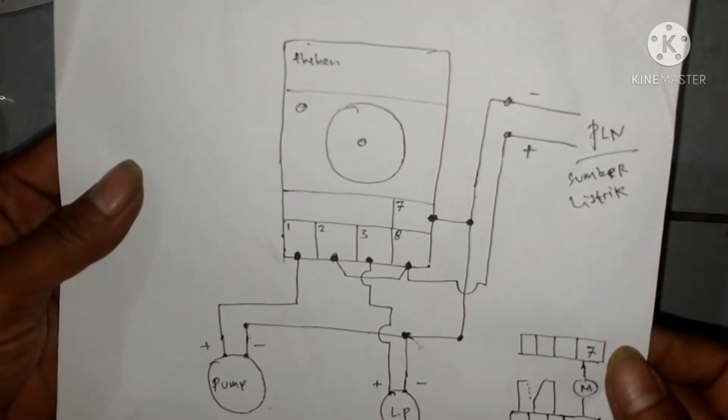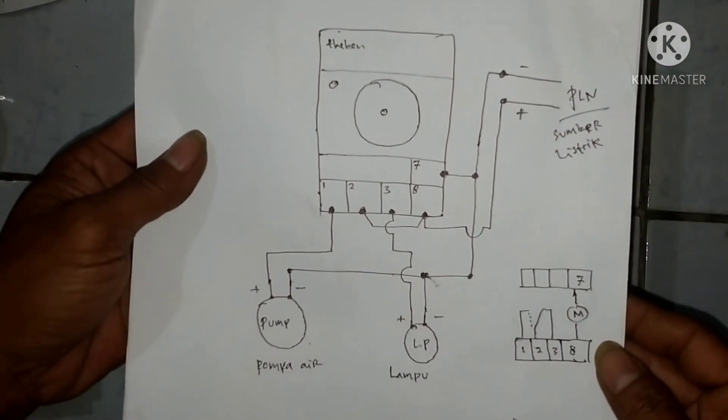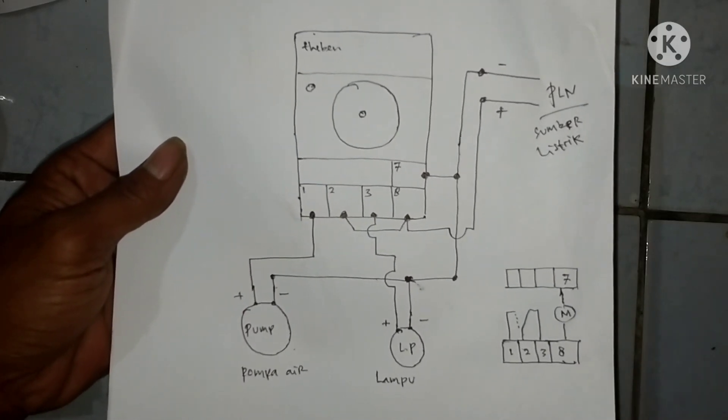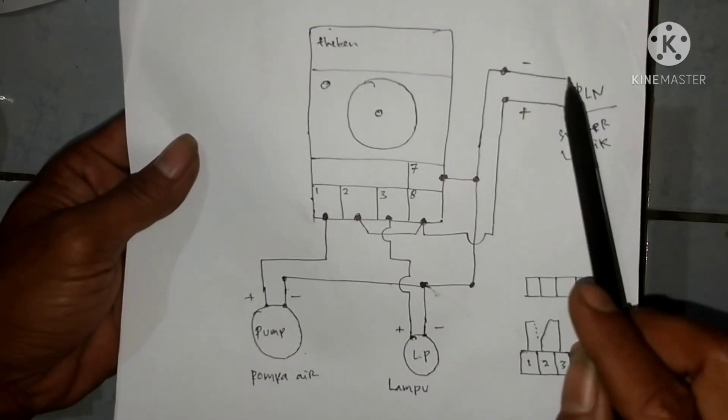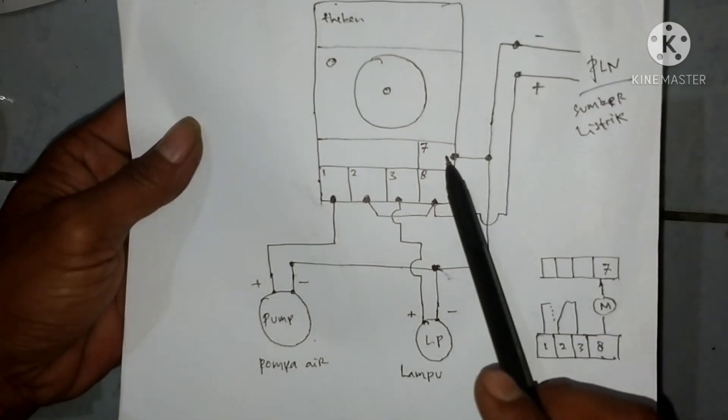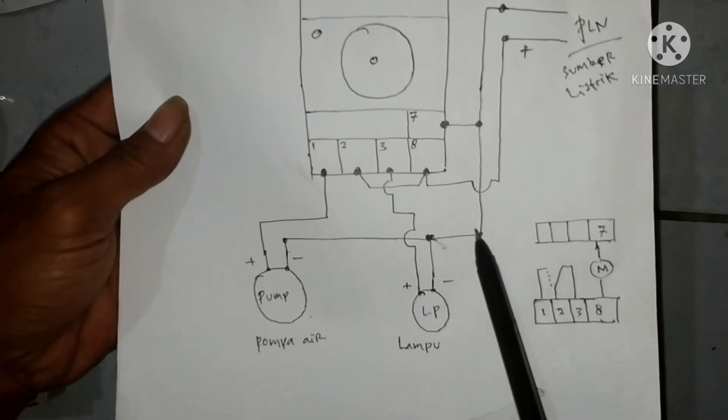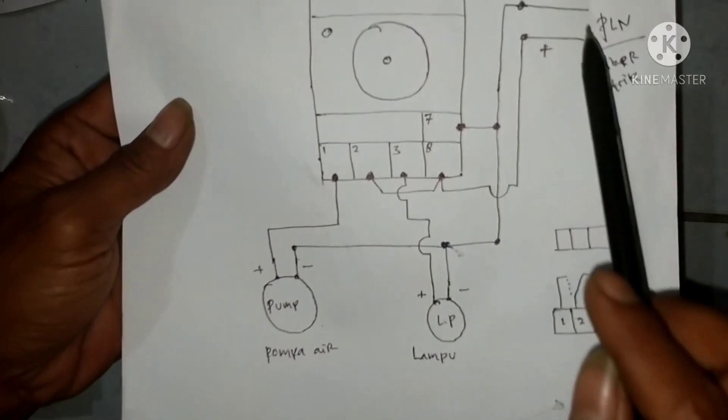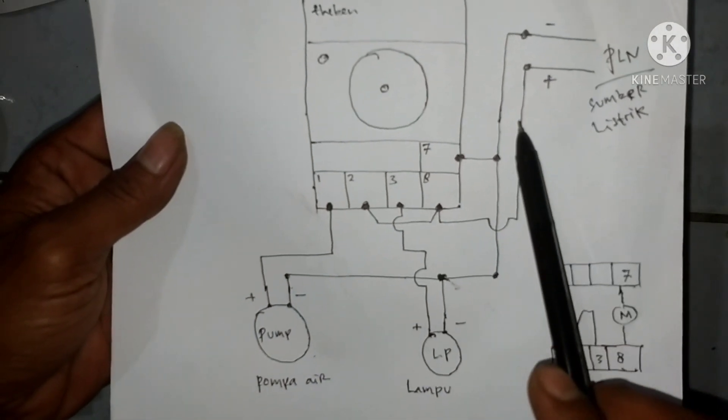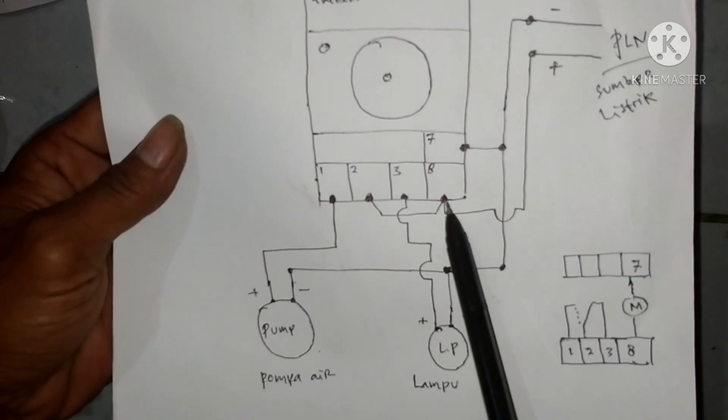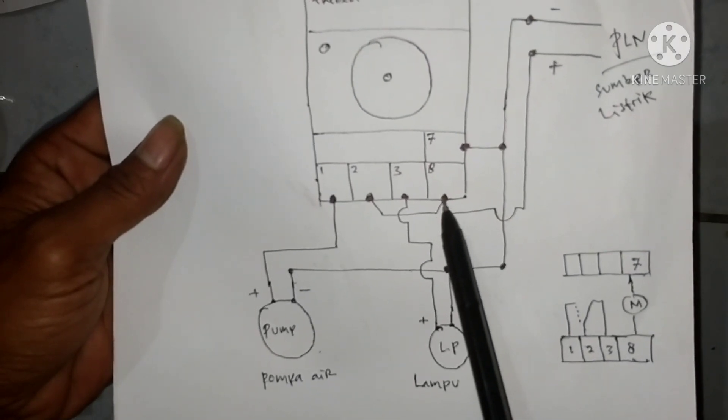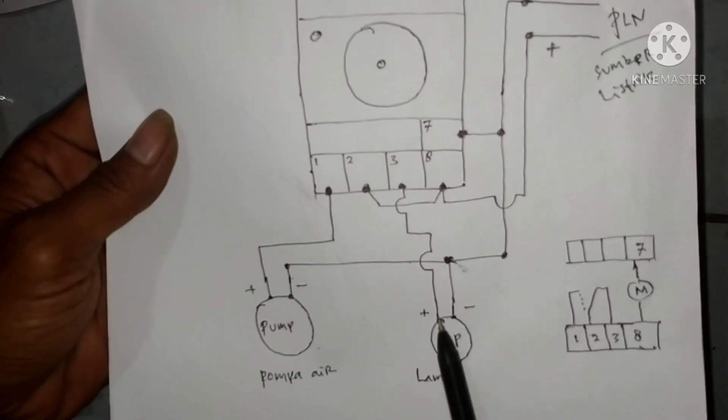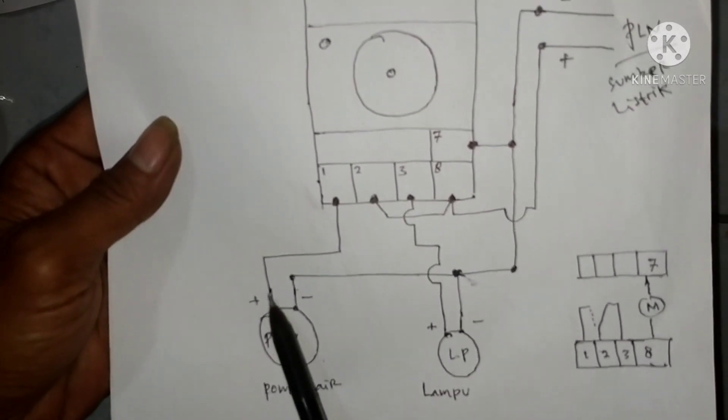Nih teman-teman cukup jelas ya alur-alurnya. Netral ini langsung masuk ke 7 kemudian bypass ke beban, semua beban sama, 1 netral 1 tarikan. Kemudian yang listriknya masuk ke 8 di-jumper ke 2. Nah bebannya masuk ke 3 atau 1.